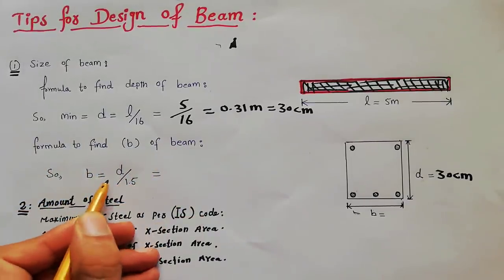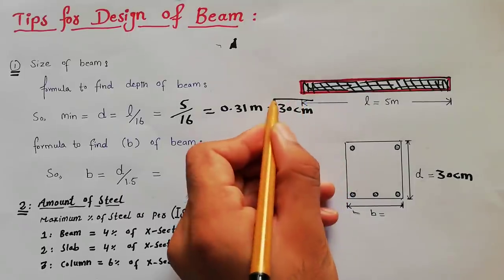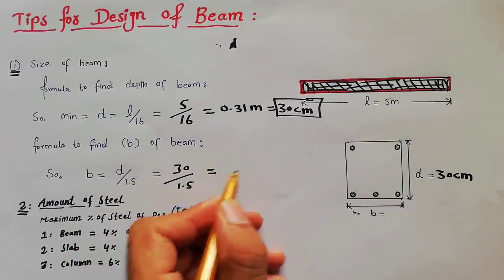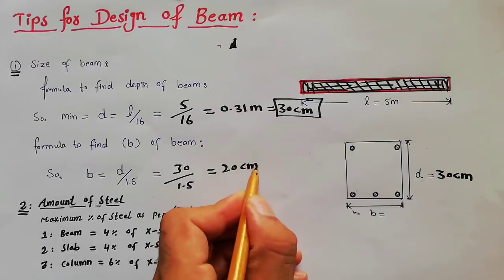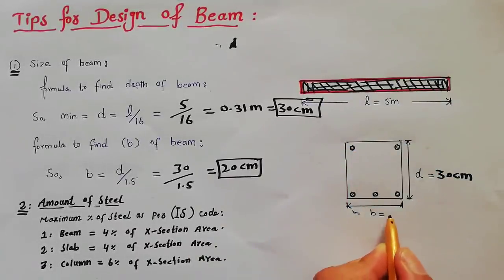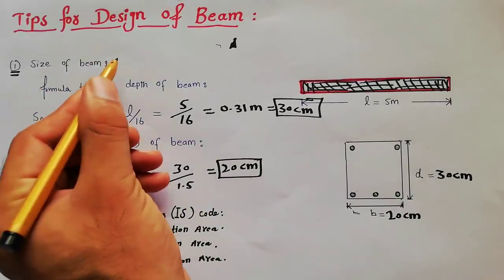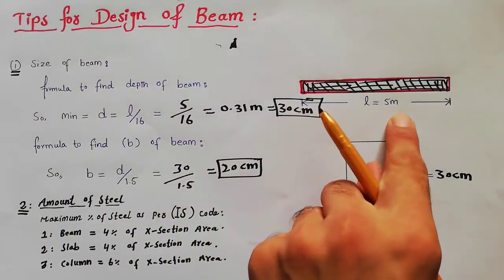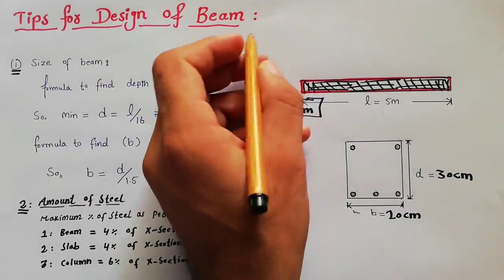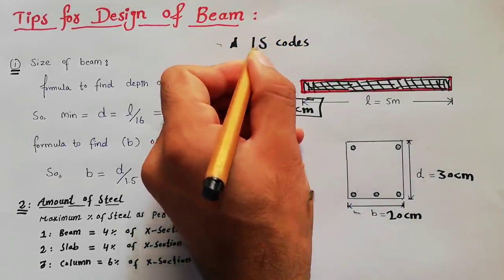The formula to find breadth of beam is: b = d/1.5. Since d is 30 cm, breadth = 30/1.5 = 20 centimeters. So for a 5-meter length beam, the breadth should be 20 centimeters. These formulas are from the IS code — Indian Standard code.